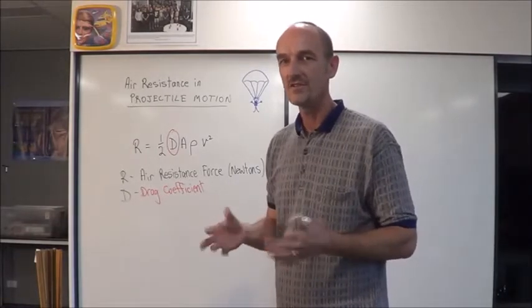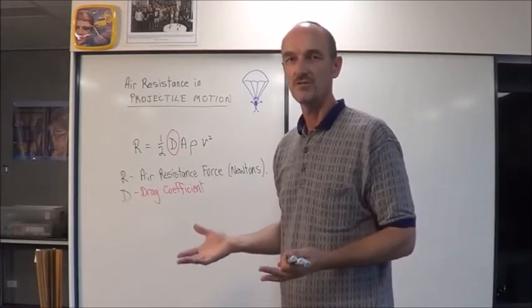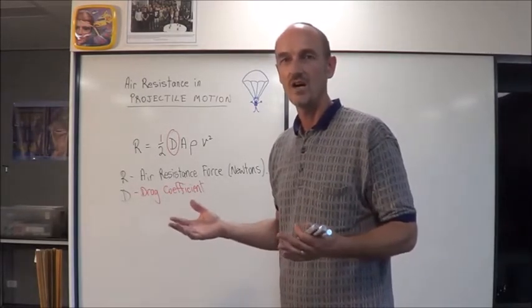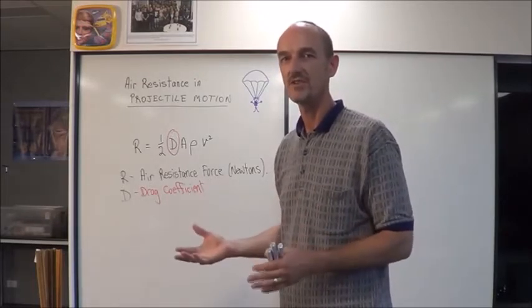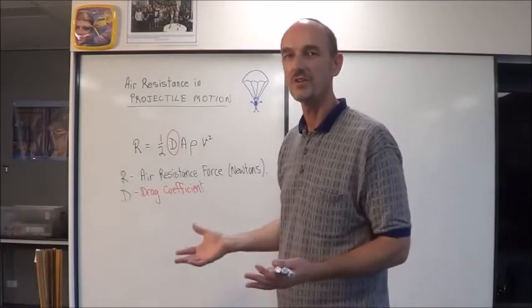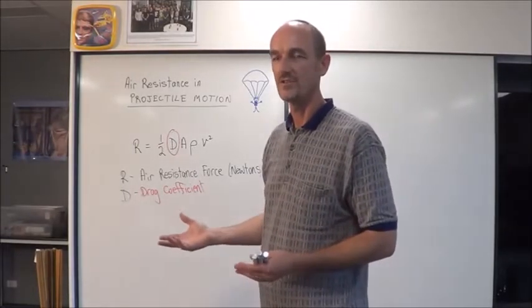The drag coefficient is just a number, and it depends on the nature of the object. For example, an average car has a drag coefficient of about 0.3, which gives you some idea of the values.